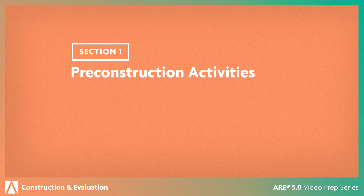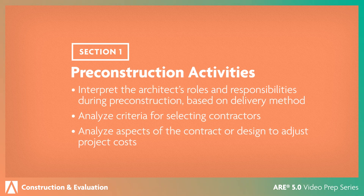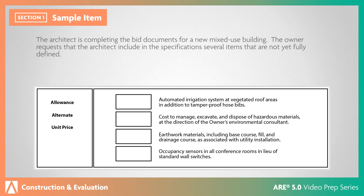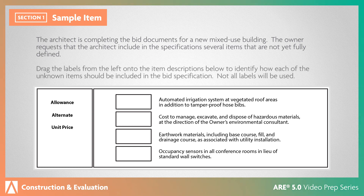In the pre-construction activities section, you'll focus on the construction planning and activities that occur prior to the start of construction. Let's look at a sample question. The architect is completing the bid documents for a new mixed-use building. The owner requests that the architect include in the specifications several items that are not yet fully defined. Drag the labels from the left onto the item descriptions below to identify how each of the unknown items should be included in the bid specification.